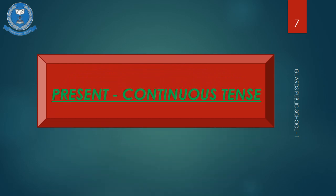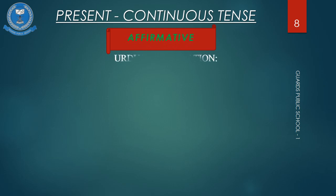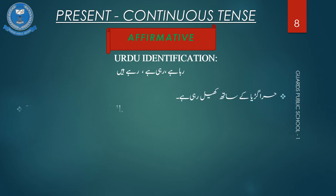Let's move to the next topic: Present Continuous Tense. Now students, let's move to Present Continuous Tense affirmative sentences. How will we recognize that they are Present Continuous Tense sentences? You can see the Urdu identification: Raha hai, Rahi hai, Rahe hai. The work which is being continued is called Continuous Tense.